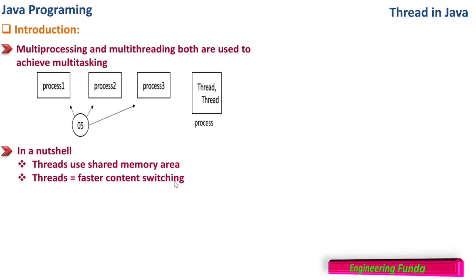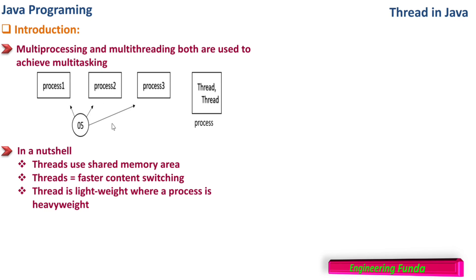Threads are used for faster context switching. A thread is lightweight whereas a process is heavyweight. When we are talking about process switching, the system first stores information about process one somewhere and then loads information about process two before giving it the execution cycle. Whereas in the case of threads, since they are using shared memory, we don't have to do all this activity of switching the memory area — just the threads are switched. They are using the same memory area, hence they are called lightweight whereas processes are called heavyweight.